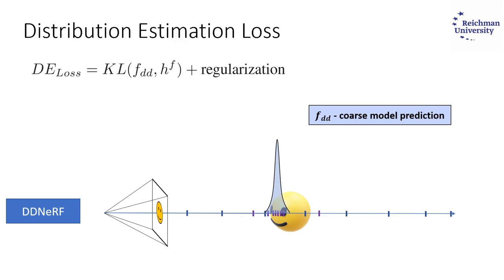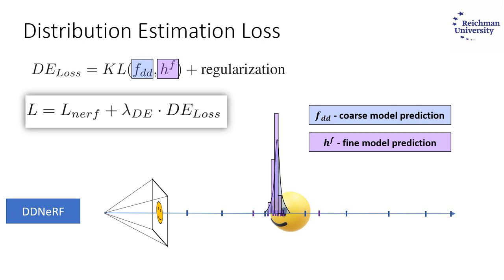The coarse network learns to predict the distribution by trying to mimic the fine network predicted distribution. We use KL divergence between those distributions and add a regularization term to avoid over-shrinking of the Gaussians. The depth estimation loss component is added to the regular NeRF loss.